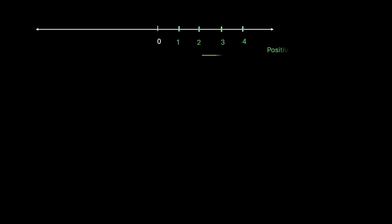This is a number line with 0 right in the middle. On the right side of the 0 we have positive numbers and on the left side of the 0 we have negative numbers. But what if I want to plot 1 by 2, a rational number on the number line?